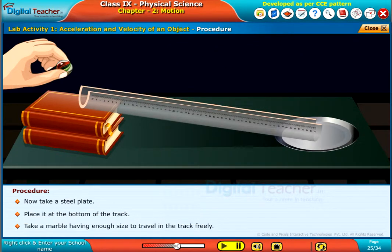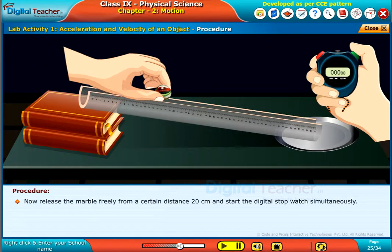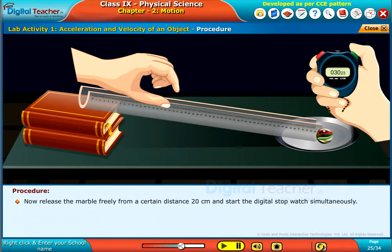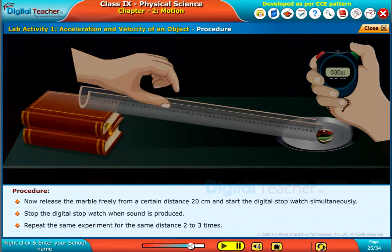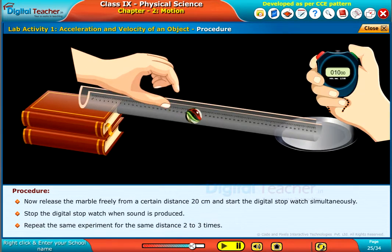Take a marble having enough size to travel in the track freely. Now release the marble freely from a certain distance, 20 centimeters, and start the digital stopwatch simultaneously. Stop the digital stopwatch when sound is produced. Repeat the same experiment for the same distance two to three times.